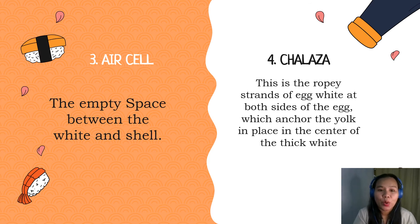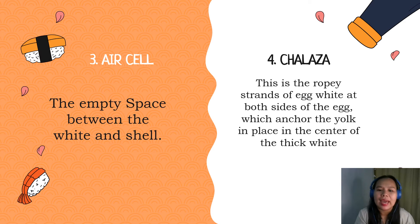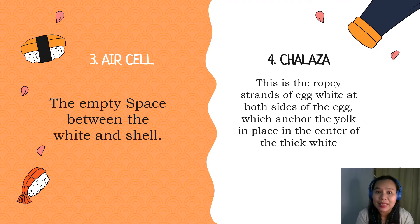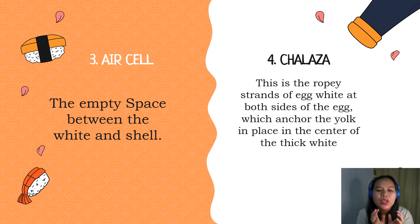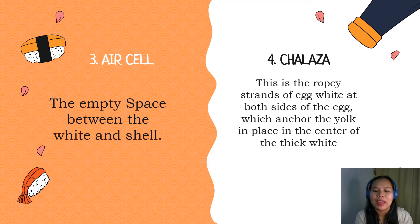Our next part is called the air cell. It is the empty space between the white and the shell. It is found at the large end of the egg, which barely exists in newly laid eggs. It is because when egg is first laid, it is warm. And as it cools, the content contract and the inner shell membrane separates from the outer shell membrane. That way, air cell is formed.